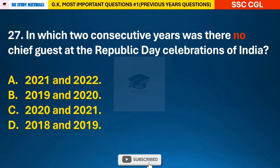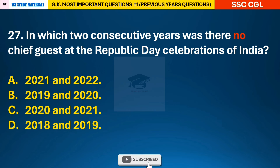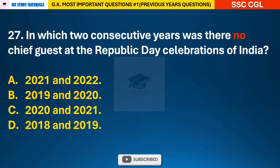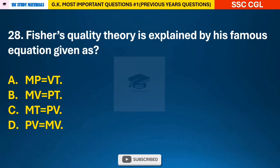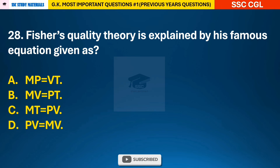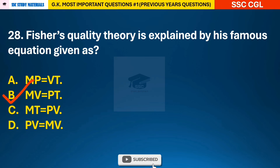Question 27: In which two consecutive years was there no chief guest at the Republic Day celebrations of India? — answer A: 2021 and 2022. Question 28: Fisher's quantity theory is explained by his famous equation — answer B: MV = PT.